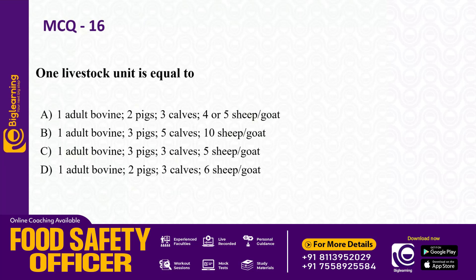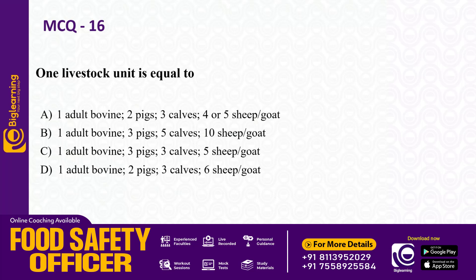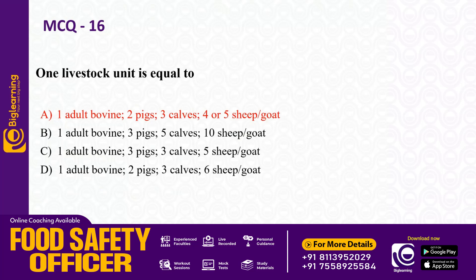One livestock unit is equal to? The answer is: one adult bovine equals one livestock unit, or two pigs, or three calves, or four to five sheep and goats. So the answer is option A: one livestock unit equals one adult bovine or two pigs or three calves or four or five sheep and goat.